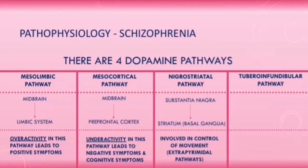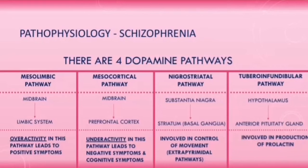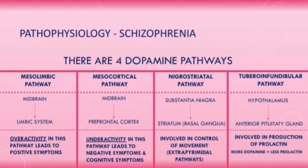The tubero-infundibular pathway goes from the hypothalamus to the anterior pituitary gland, and is responsible for the production of prolactin. Dopamine and prolactin have an inverse relationship: increased dopamine leads to less prolactin being produced, and less dopamine leads to more prolactin being produced.